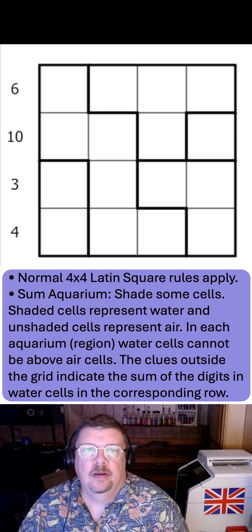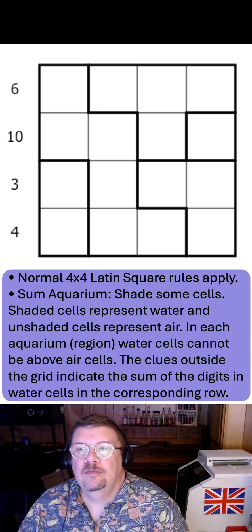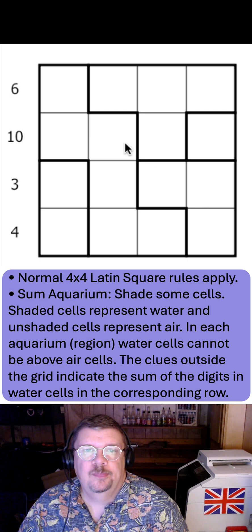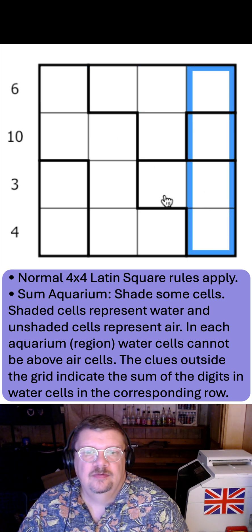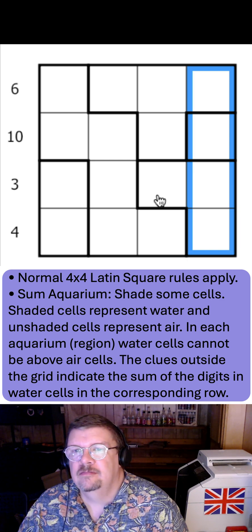Aquarium Latin Square by Orope. Normal 4x4 Latin Square rules apply, so the digits 1 to 4 in every row and every column. There is no digit restriction on regions.